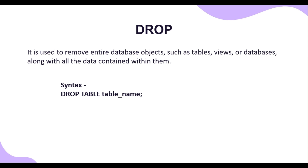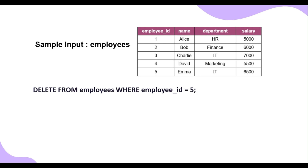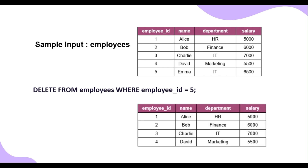Let's understand these three commands with the help of an example. Assume you have an employees table containing four columns: employee ID, name, department, and salary. The DELETE command removes specific rows based on a condition or all rows if no condition is provided. For example: DELETE FROM employees WHERE employee_id = 5. After running this command, only the row with employee ID 5 will be deleted, and the output will show the remaining records.